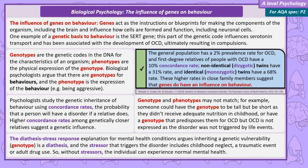A quick note: in this video I've used physical examples like blue eyes and height to help you understand the relationship between genotype and phenotype. However, when writing about the work of biological psychologists, you need to focus your writing on how genes can influence the expression of behaviours like aggression and OCD.